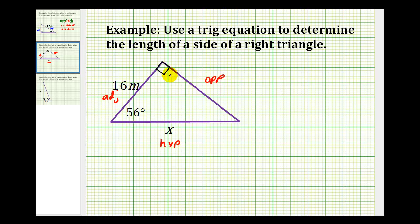For this problem, we want the trig function that involves the adjacent side and the hypotenuse, which is the cosine function. So we have cosine of 56 degrees equals 16 over x.